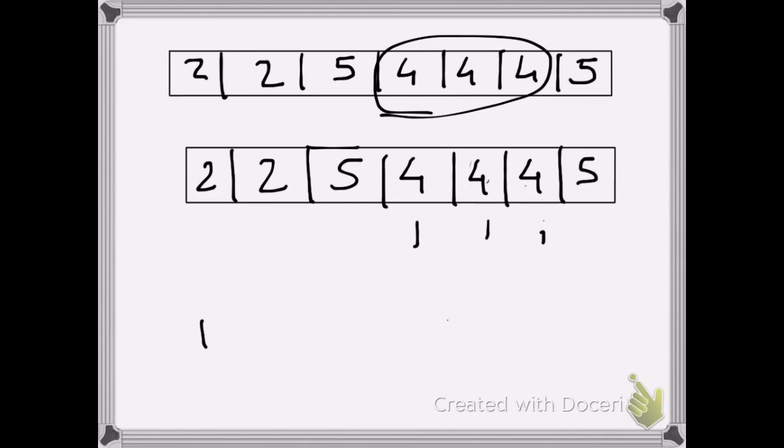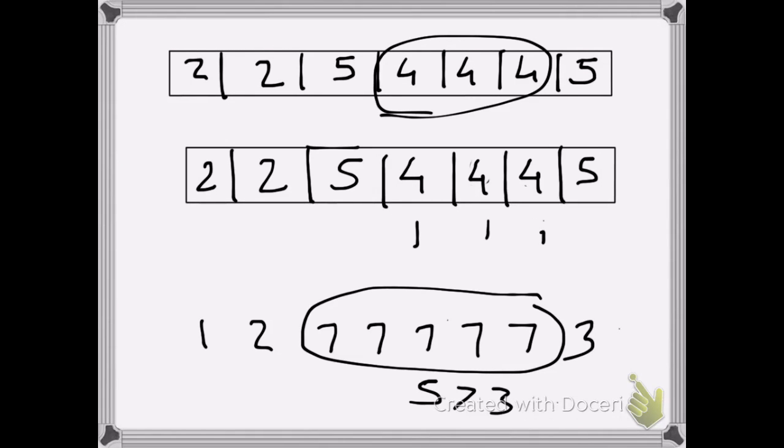Suppose our array is 1, 2, 7, 7, 7, 7, 7, 3. So again in this case the answer will be yes because we have a sequence 7, 7, 7, 7, 7 which comes 5 times which is greater than 3. So again our answer will be yes. This was the logic of the sum.